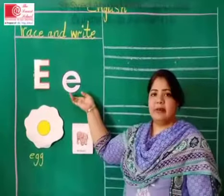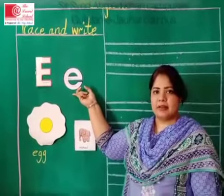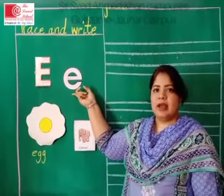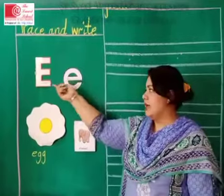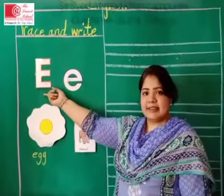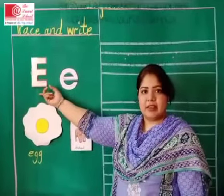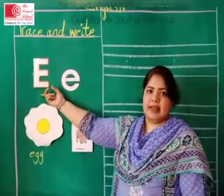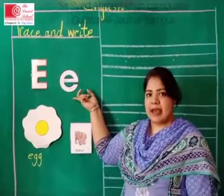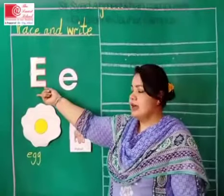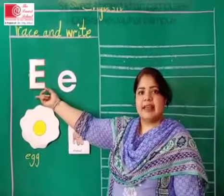Okay, can you tell me which sound is this? This is sound E. Sound E. Repeat after me — sound E. And which letter is this? This is E. The sound of this letter is E, and the alphabet of this letter is E.